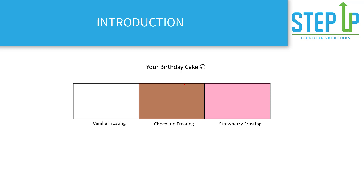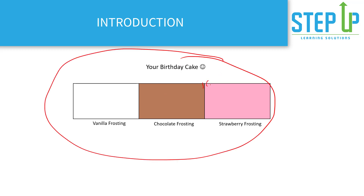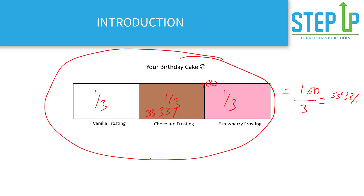Imagine a birthday cake with three equal flavorings: vanilla, chocolate, and strawberry frosting. If the whole cake is 100, and these are three equal parts, each part is 1 by 3. So what percentage is the chocolate frosting? If total is 100, it would be 100 by 3, which is 33.33 percent. So the chocolate frosting is 33.33 percent.